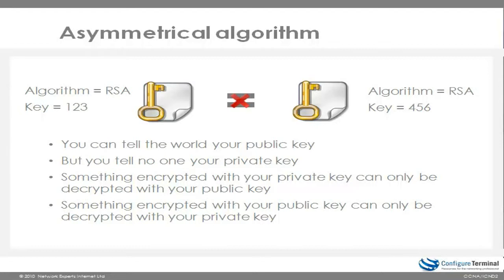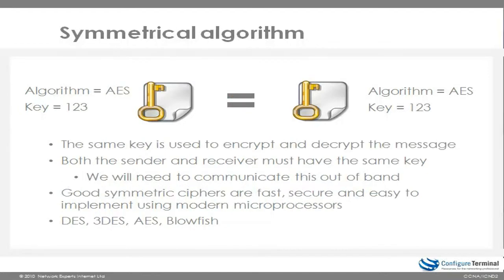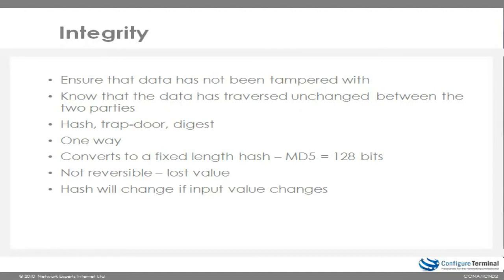Asymmetric algorithms are also used for other things like authentication, which I'm going to talk about in a moment. Symmetric key algorithms, such as AES, are used for bulk encryption of data. So we've covered confidentiality or encryption. Let's look at the second goal, which is integrity. We want to ensure that data has not been tampered with — that the data has traversed the internet or other network unchanged between the two parties. Data integrity uses algorithms known as hashing algorithms, also known as trapdoor or message digests. These are one-way algorithms, unlike encryption algorithms, which can be reversed.